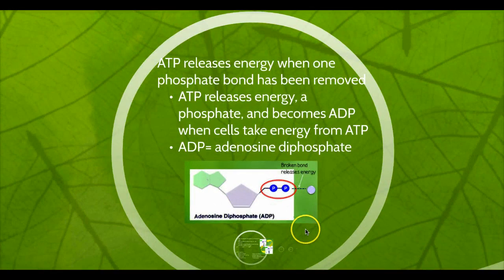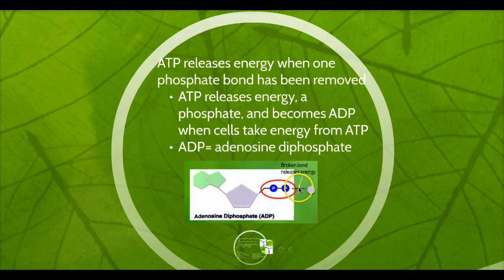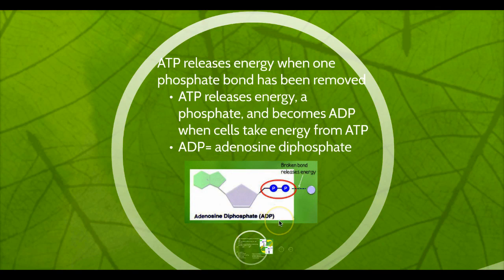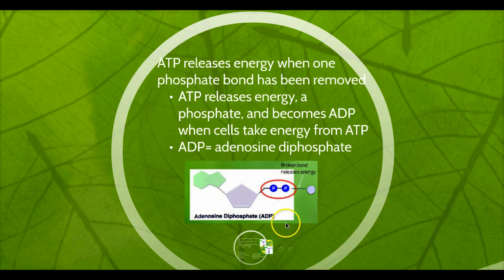When our cell needs to release that energy to use it, they break the bond between the first and the second phosphate group. So ATP releases energy and releases a phosphate, and now this molecule is called ADP — adenosine diphosphate. "Di" means two. So this is adenosine diphosphate. It's now lower on energy because we just broke that bond and released the energy that was stored between those two phosphate groups.